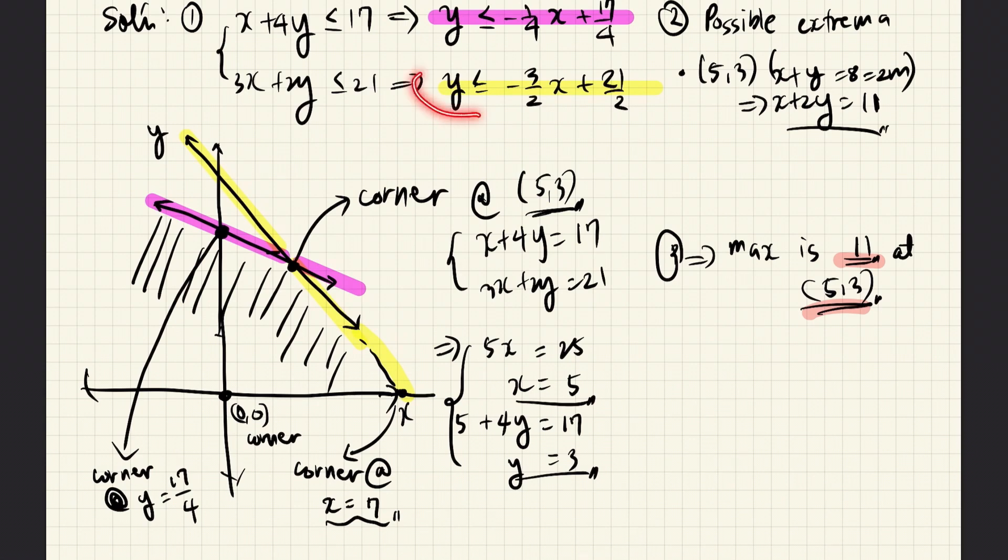Similarly for the yellow line, again we see that the slope is minus 3 halves, which means that it is decreasing from left to right because of the negative sign.